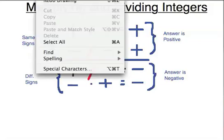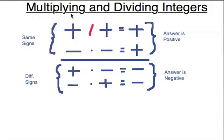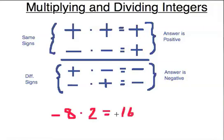Now let's go back to multiplication and try some examples. Let's start with negative 8 times positive 2. First of all, what's 8 times 2? It's 16. But it's a negative times a positive — the answer is going to be negative. How about positive 8 times negative 3? Well, 8 times 3 is 24, but a positive times a negative is a negative, so this is going to be negative also.